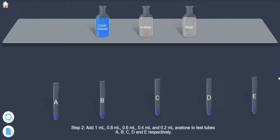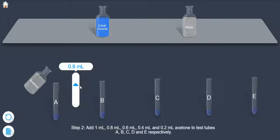Add 1 ml, 0.8 ml, 0.6 ml, 0.4 ml and 0.2 ml acetone to test tubes A, B, C, D and E respectively.